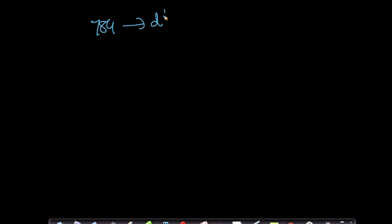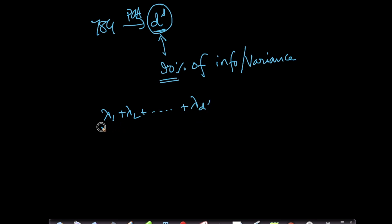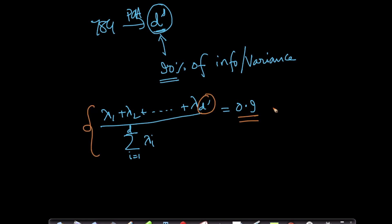Oftentimes, when going from 784 dimensions to D' dimensions through PCA, people want to find a D' which retains 90% of the information. We want to find D' such that (λ₁ + λ₂ + ... + λ_D') / (Σᵢ λᵢ) = 0.9 — we want to find that D' such that 90% of the information or variance is explained using PCA.